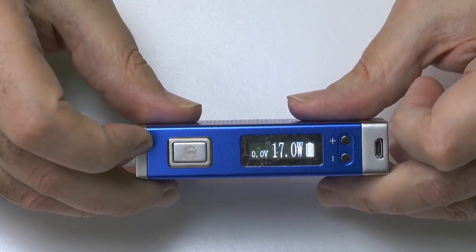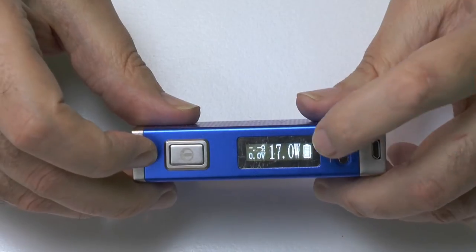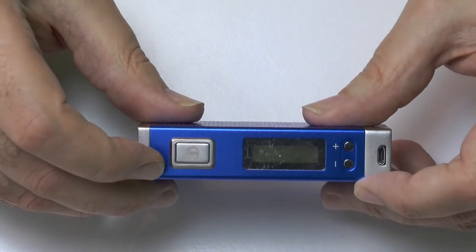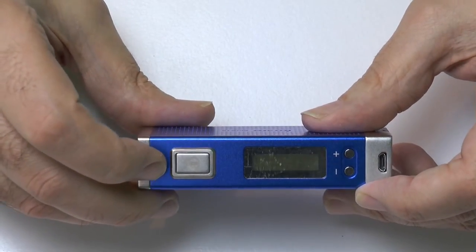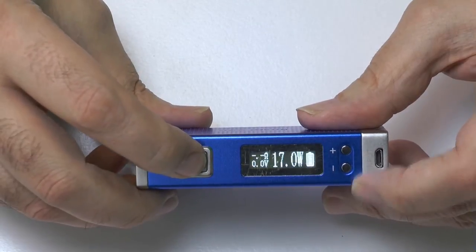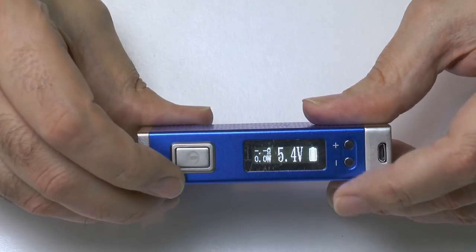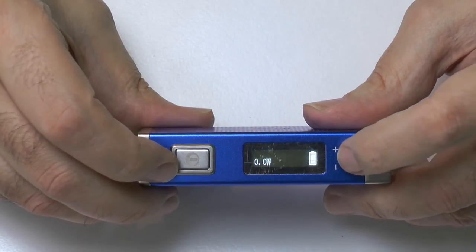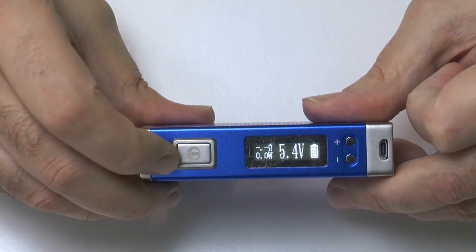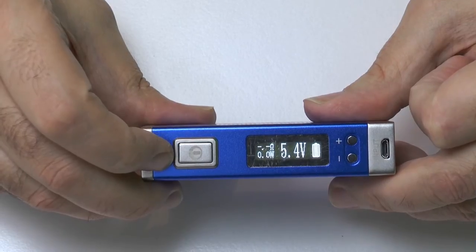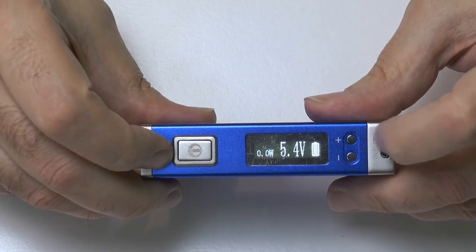This is a variable voltage or variable wattage device. It's currently in wattage mode and if I wanted it in voltage mode you simply depress the fire button and then hold down the minus and that changes it into voltage mode. It then flashes. If you press the fire button again it locks it into voltage mode.